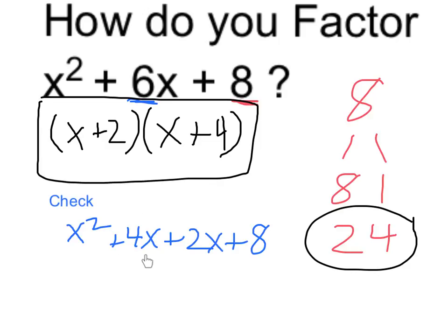And this 4 and 2 add together to become my original 6 here. So this is in fact equal to x squared plus 6x plus 8, and again, this is the same expression in factored form. Thank you.